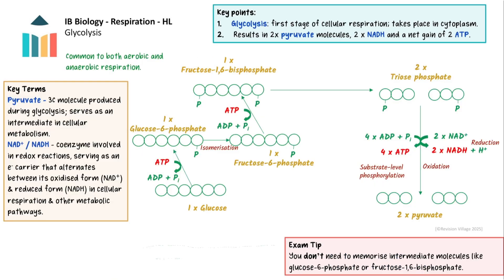Now let's start at the very beginning of aerobic respiration with glycolysis. Glycolysis takes place in the cytoplasm. It's the first step in both aerobic and anaerobic respiration. A six-carbon glucose molecule is first phosphorylated using one ATP molecule to form glucose 6-phosphate. This is then isomerised to fructose 6-phosphate, which is phosphorylated again by a second ATP molecule to form fructose 1,6-bisphosphate, an unstable 6-carbon bisphosphate molecule.